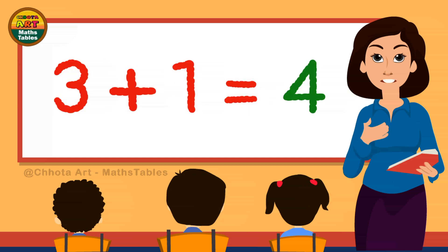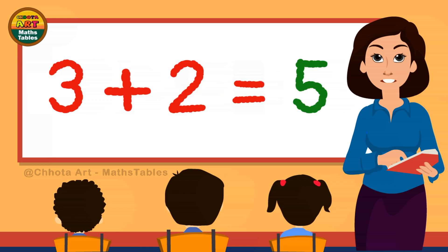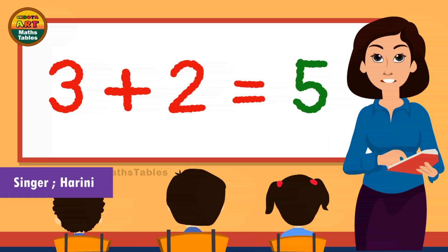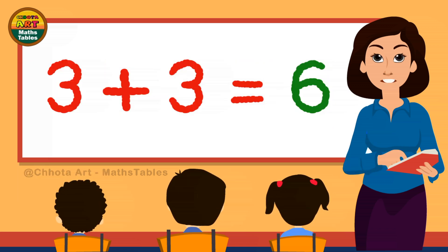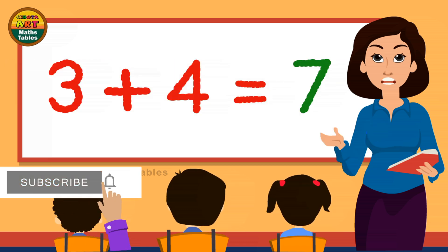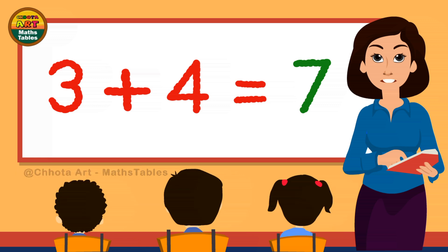3 plus 1 is 4. 3 plus 1 is 4. 3 plus 2 is 5. 3 plus 2 is 5. 3 plus 3 is 6. 3 plus 3 is 6. 3 plus 4 is 7. 3 plus 4 is 7.